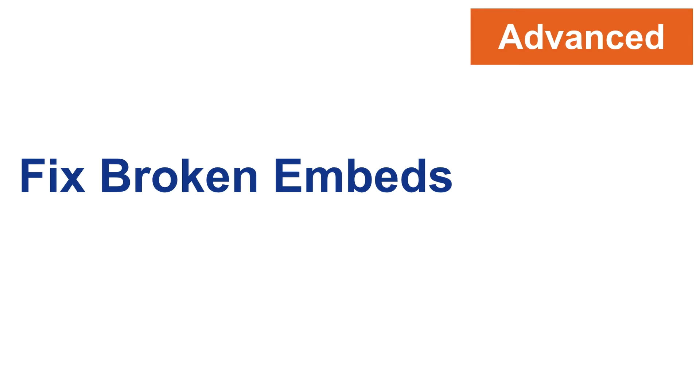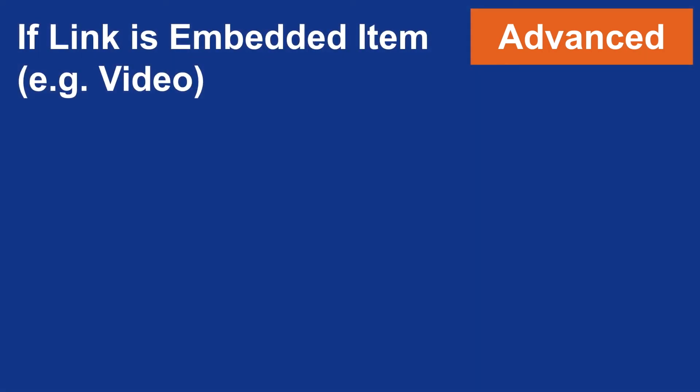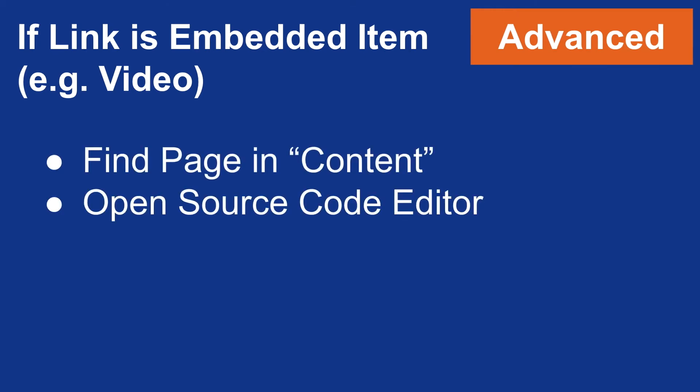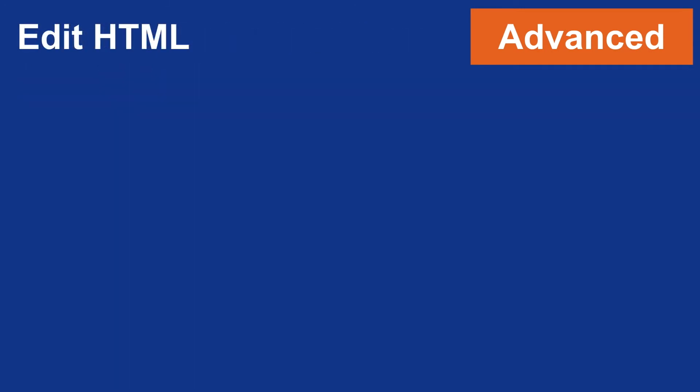An advanced piece to look at is how to fix broken embeds. If a link is embedded within your course, like a video, you'll find the page initially within the content section, and you'll go straight into the source code editor, which is a little different from the initial HTML text editor. You're looking at the actual code to do this advanced task, and you'll be doing something called replacing the iFrame.